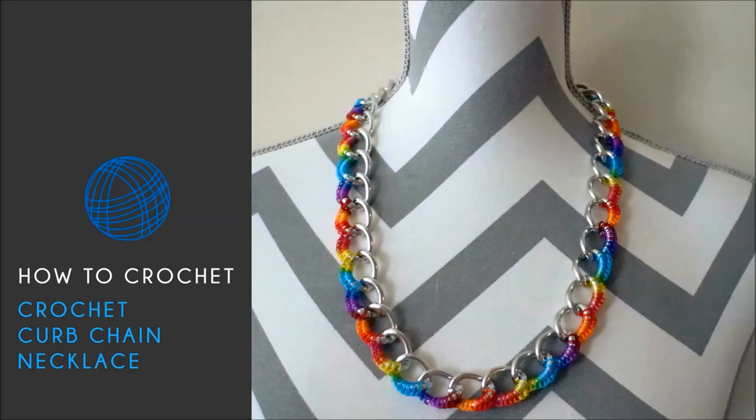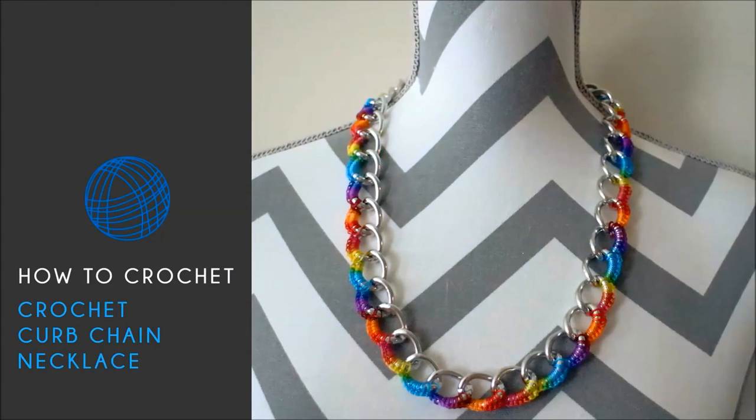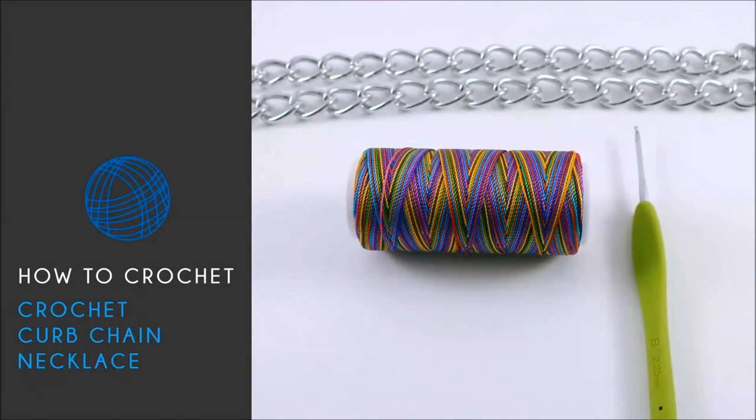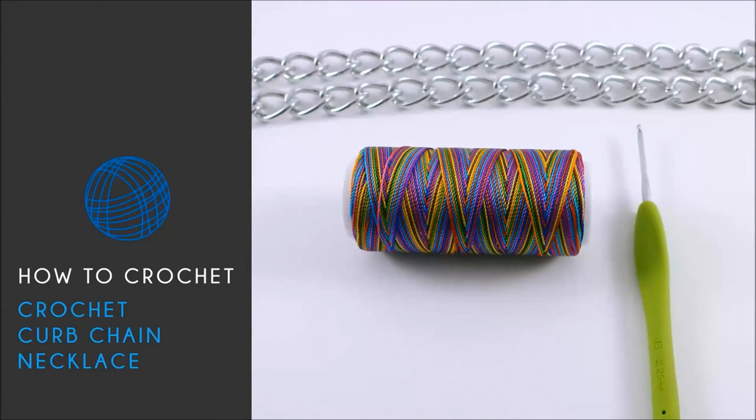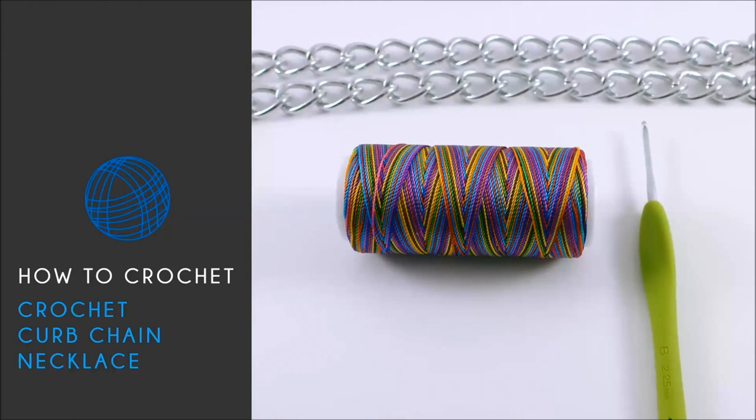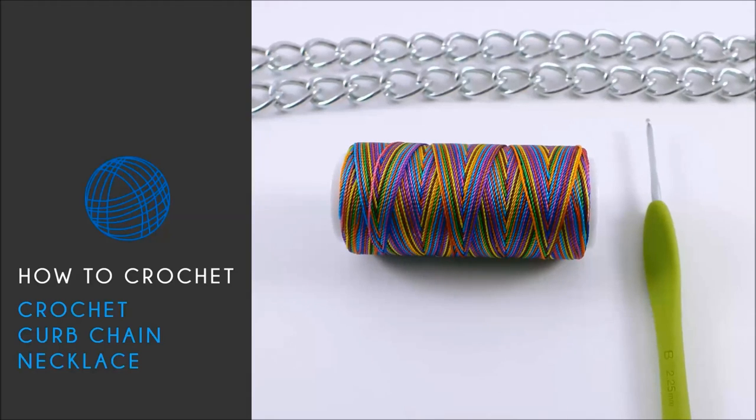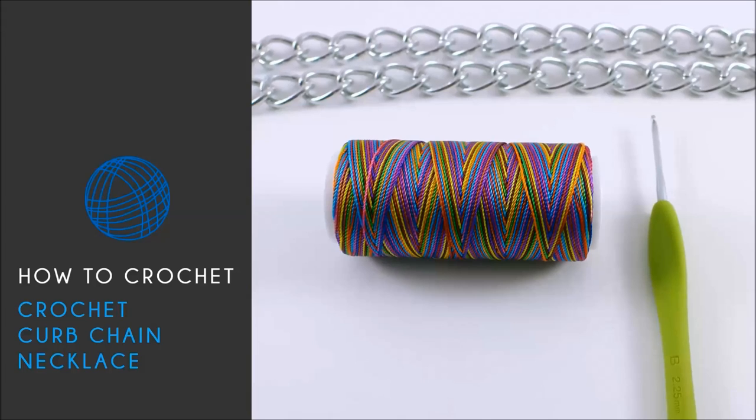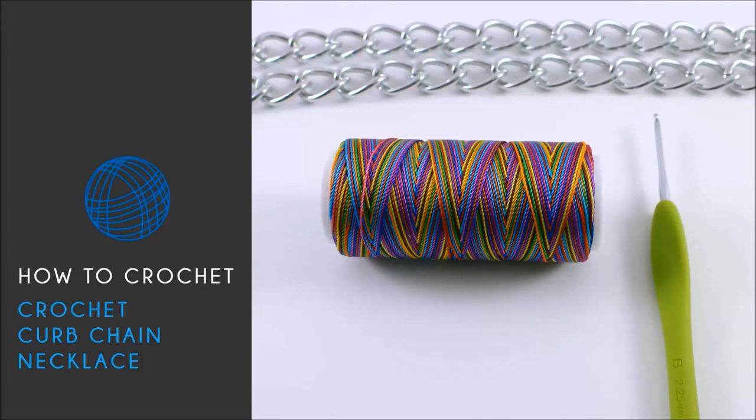For this project, you're going to need one spool of Red Heart Sizzle in the colorway of your choice, a size B or 2.25 millimeter crochet hook, and I'll be using a size 20 inch curb chain. Now you can use whichever size you want. You can actually do this with a bracelet or a tighter necklace. So you're just going to need any type of curb chain that you want to use.